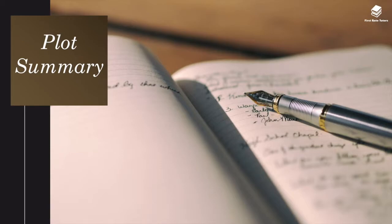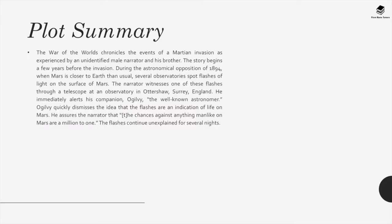Moving on to the plot summary. The War of the Worlds chronicles the events of a Martian invasion as experienced by an unidentified male narrator and his brother. The story begins a few years before the invasion. During the astronomical opposition of 1894, when Mars is closer to Earth than usual, several observatories spot flashes of light on the surface of Mars. The narrator witnesses one of these flashes through a telescope at an observatory in Ottershaw, Surrey, England. He immediately alerts his companion Ogilvy, the well-known astronomer. Ogilvy quickly dismisses the idea that the flashes are an indication of life on Mars, assuring the narrator that the chances against anything manlike on Mars are a million to one.